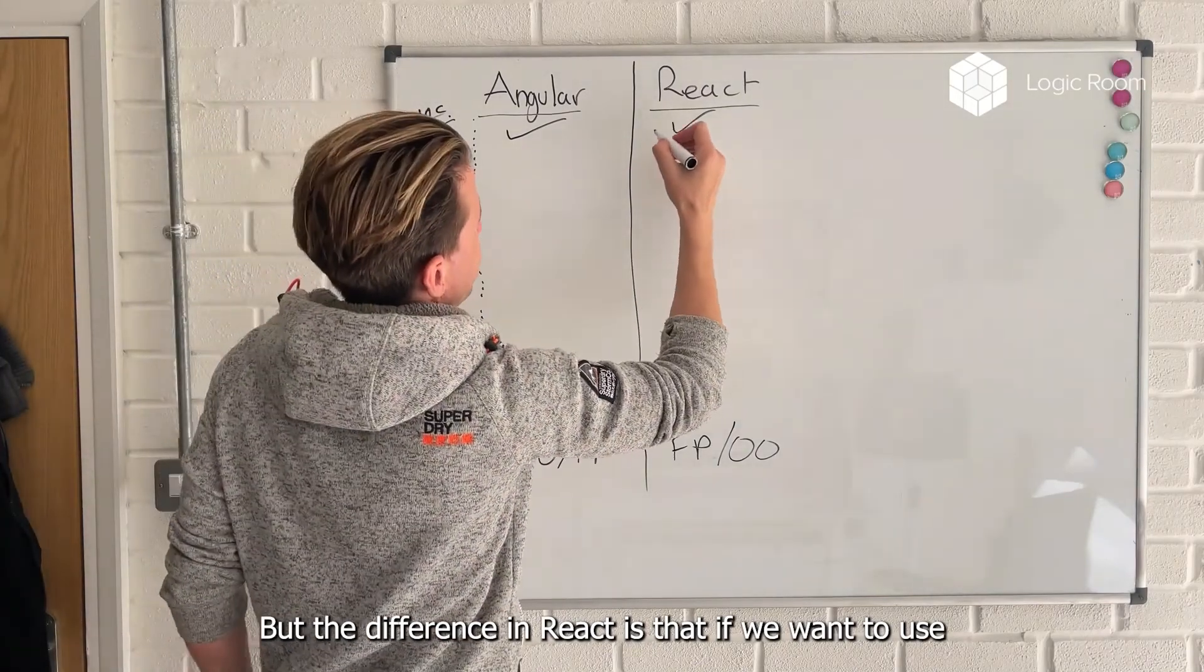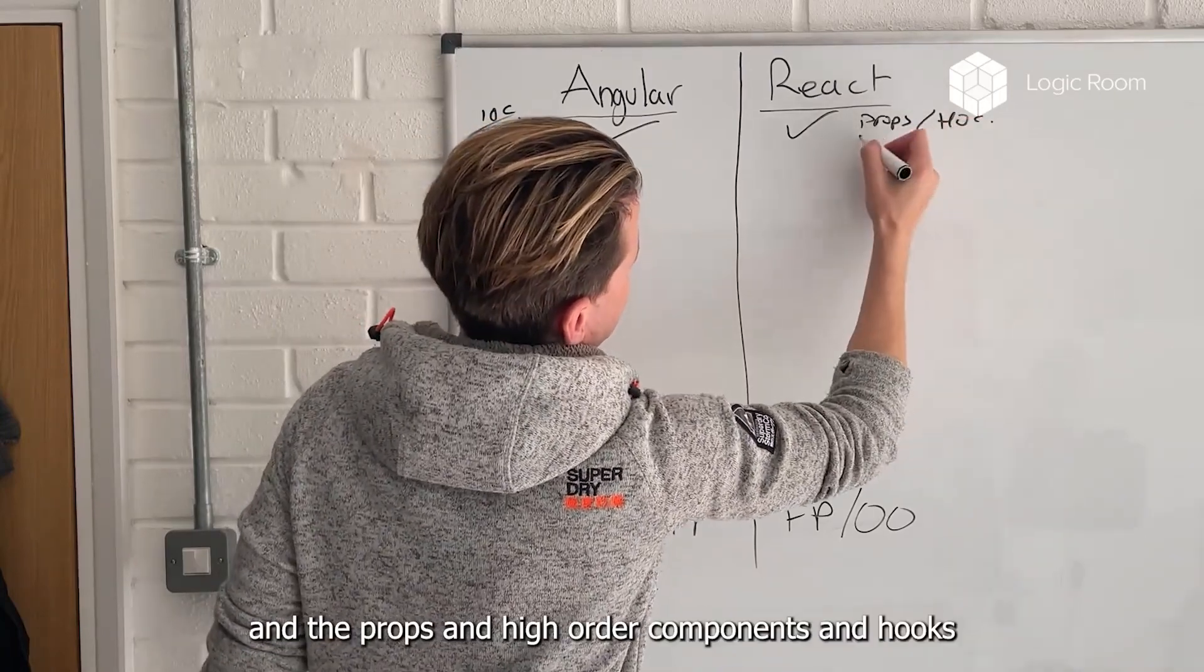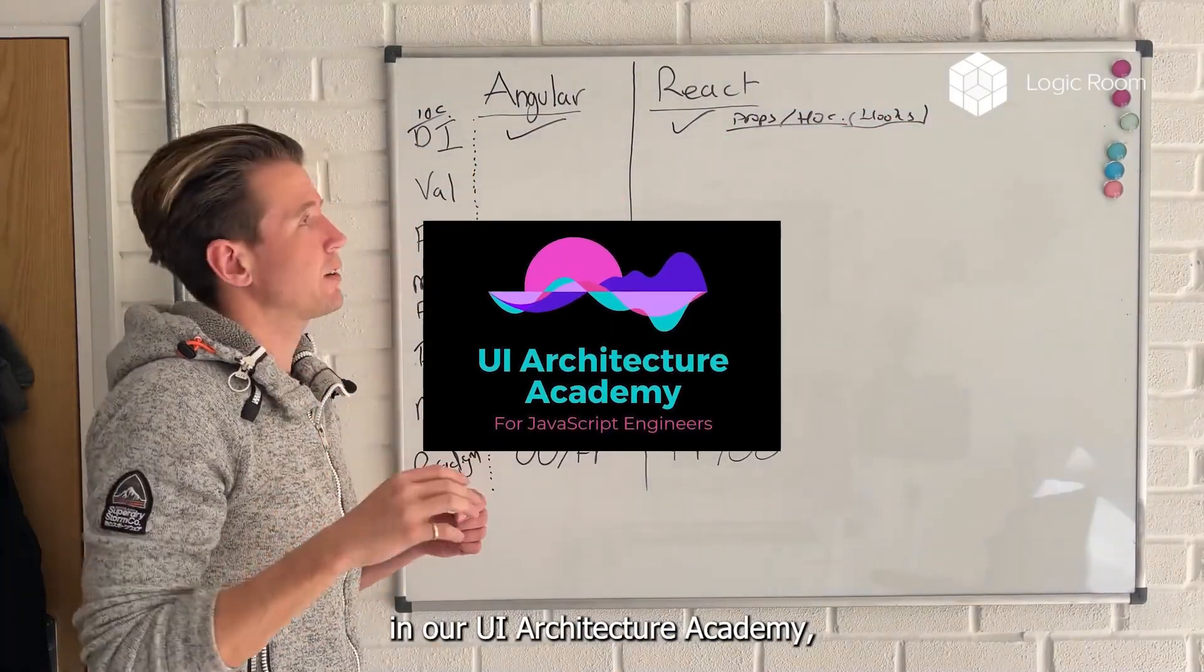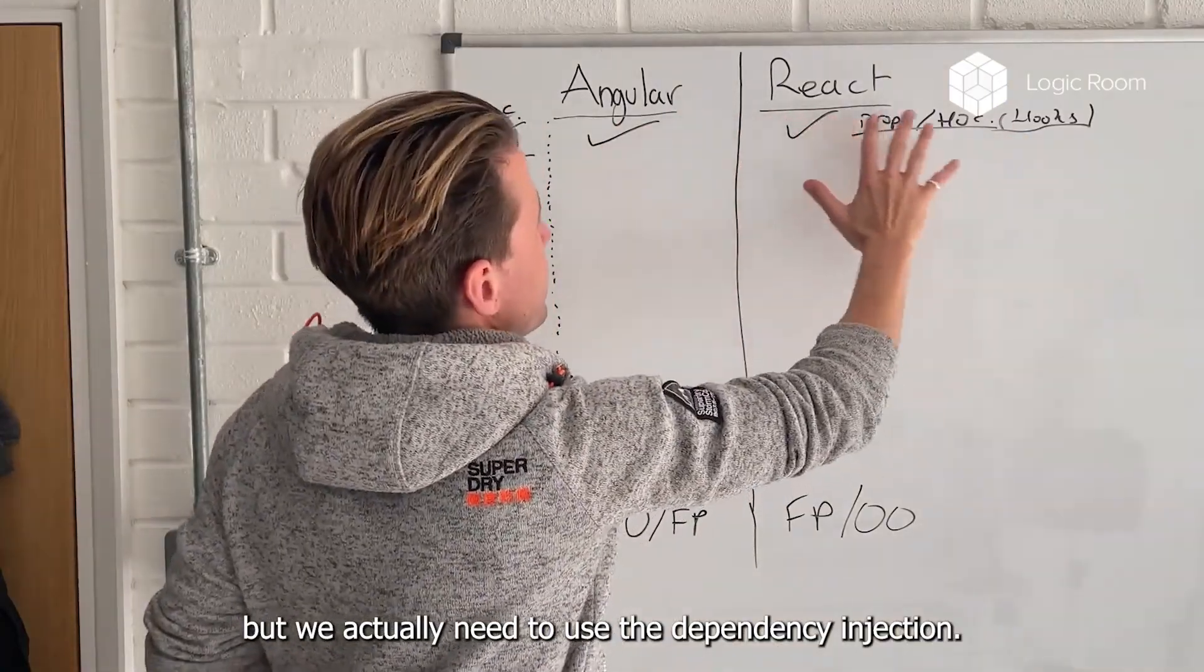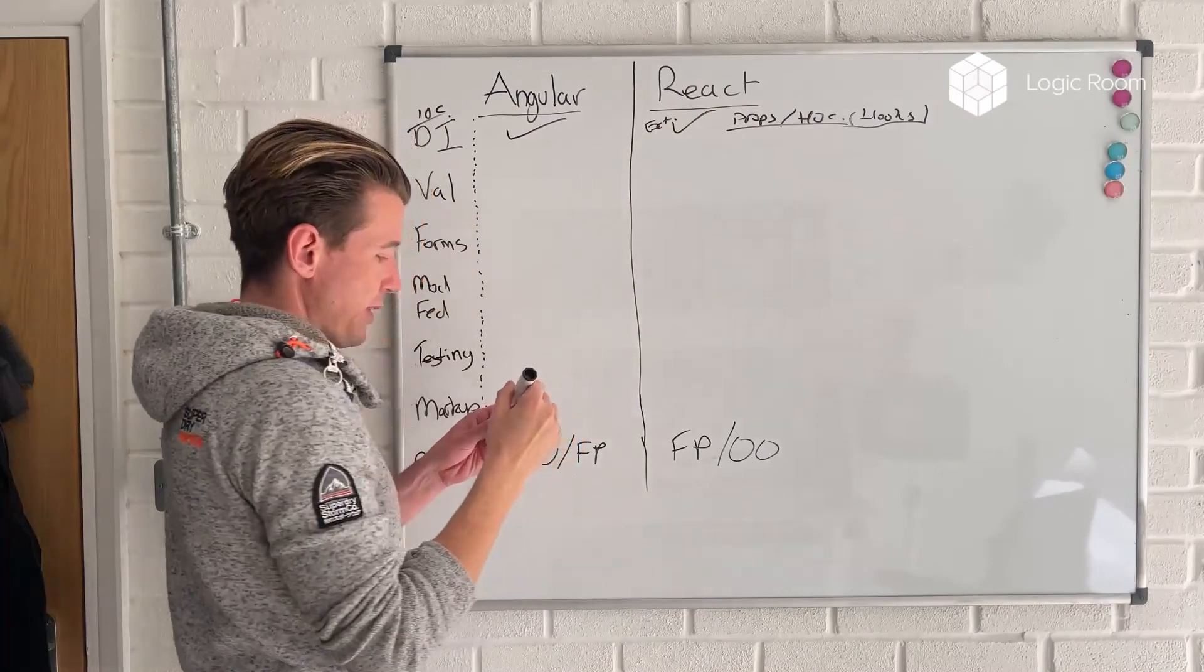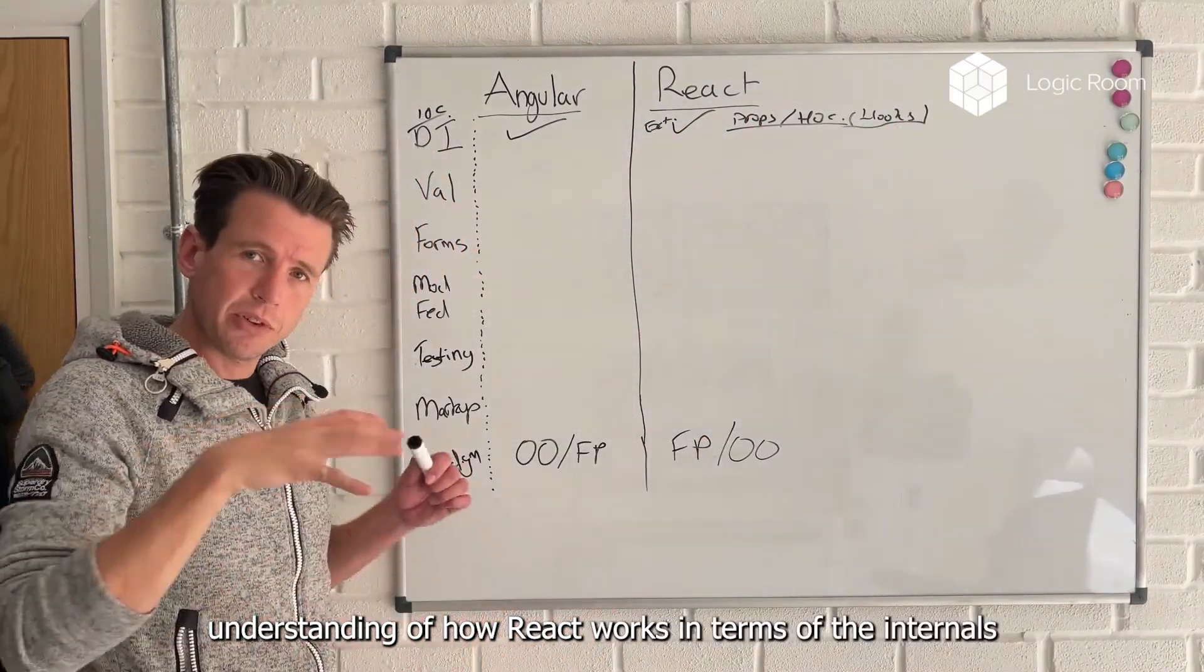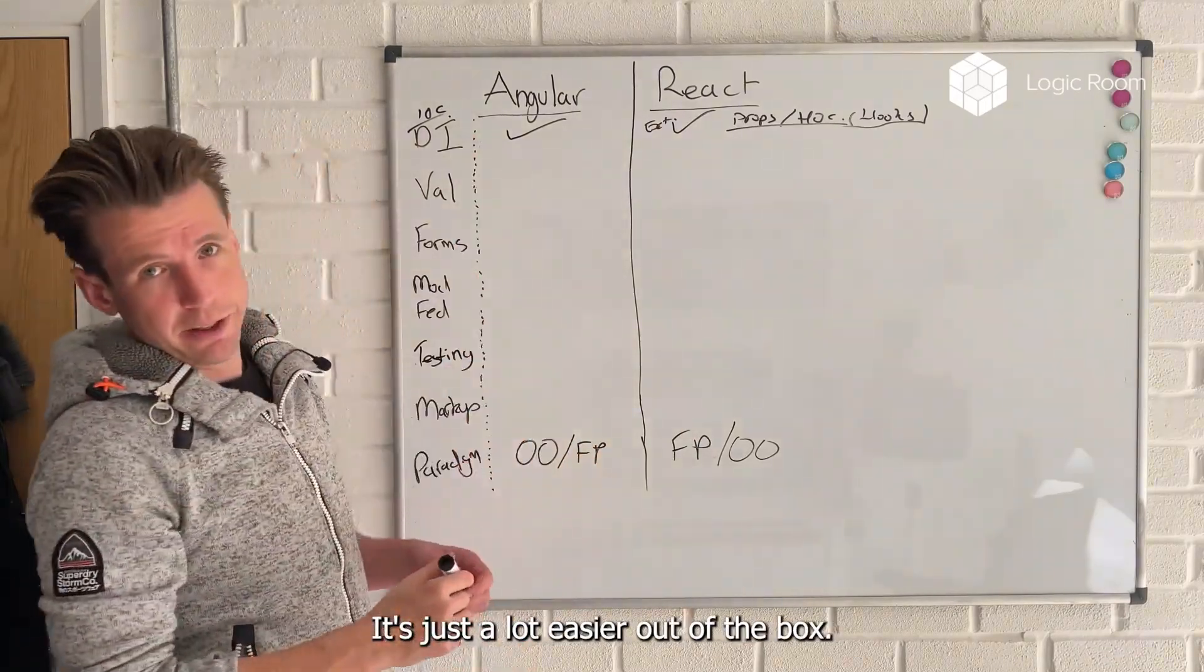But it's also important to do it in React. But the difference in React is that if we want to use an IOC container, we are ultimately going to have to use props and higher order components and hooks to enable this to happen. I know this because this is what we teach in our UI Architecture Academy. But we actually need to use the dependency injection in a slightly different way. It can be done, but it does require an external plugin. It does require us to find an inversion of control container and implement it. And we will need to have a deep understanding of how React works internally. It's just a lot easier out of the box.